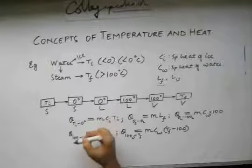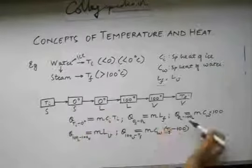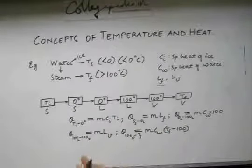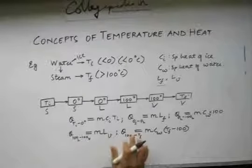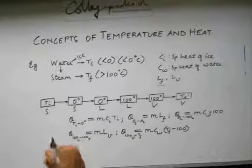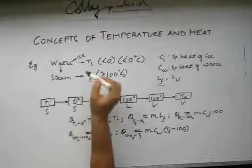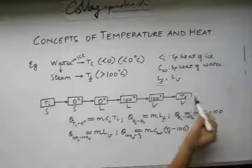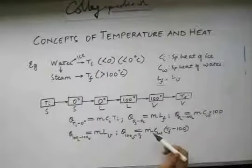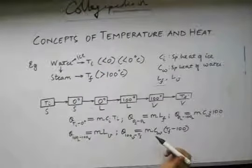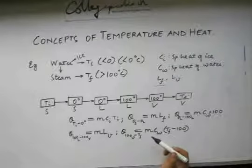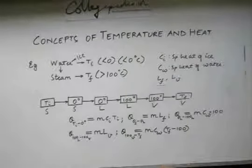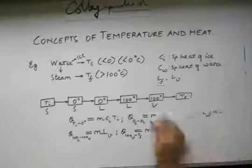If we add up all these heats, that is the net heat that is going to be required — the net heat energy required to convert ice at temperature Ti to steam at temperature Tf. Let us look at a problem.